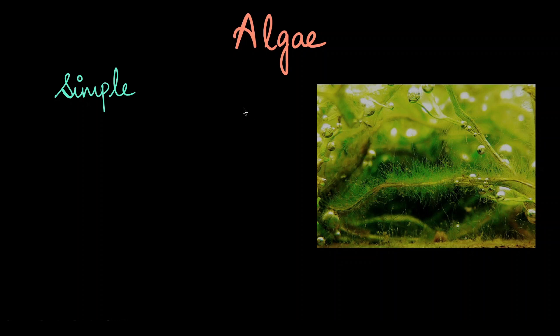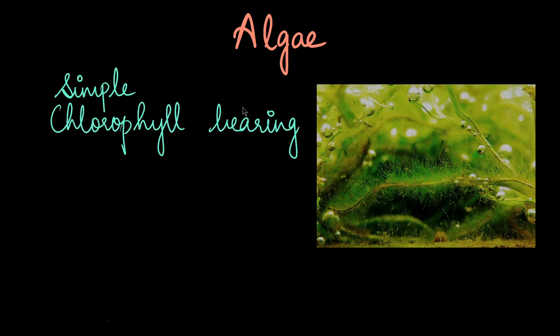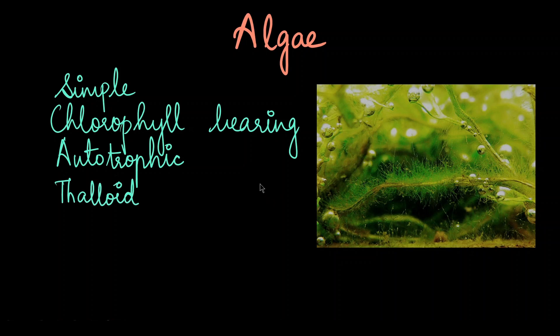Algae is a very simple organism. It has chlorophyll, that's why it appears green or any other color. They are autotrophic — they can produce their own food — and they are thaloid. Thaloid just means that they appear like a flattened structure, something like a leaf. It's important to notice that they do not have any complex cellular organization like organs. So although they are green, they do not have any true roots, stems, or leaves.